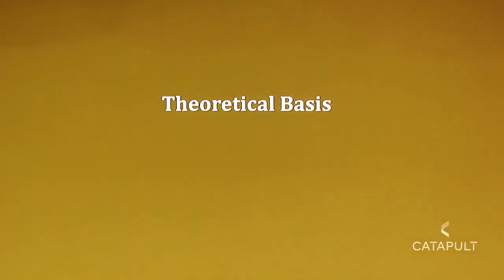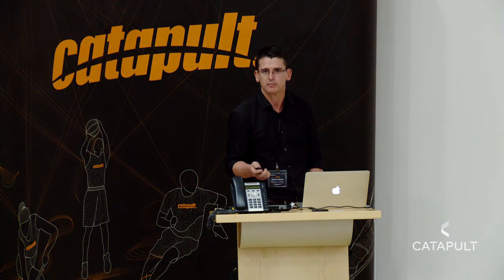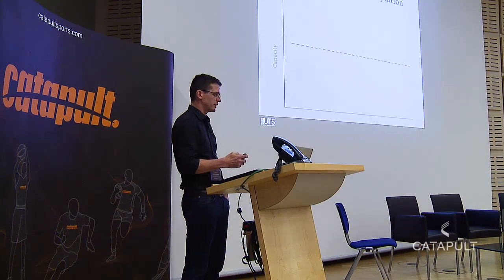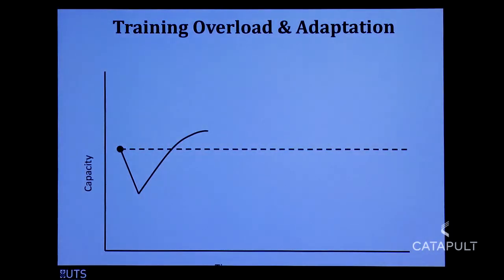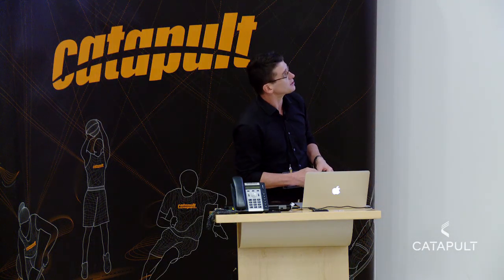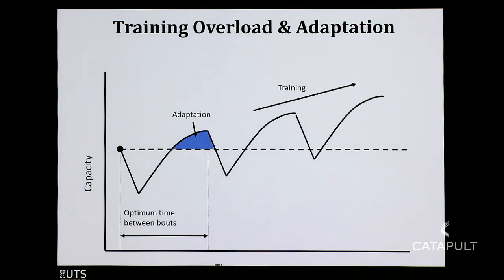Let's revise the theoretical basis of training periodisation, training monitoring, and why we set up systems that prepare athletes to perform but also reduce their risk of injury. We all know when we do a training bout, immediately our capacity is reduced, and then we slowly readapt and super compensate. That adaptation occurs, and in theory we see this curve, and we know that if we get the optimum time between our training bouts, we will get the training effect and improvements in our physical capacities — in theory.